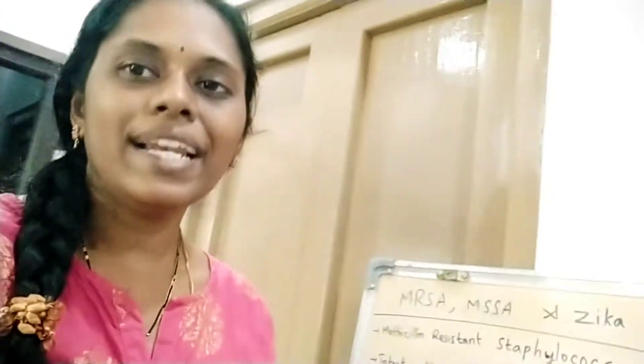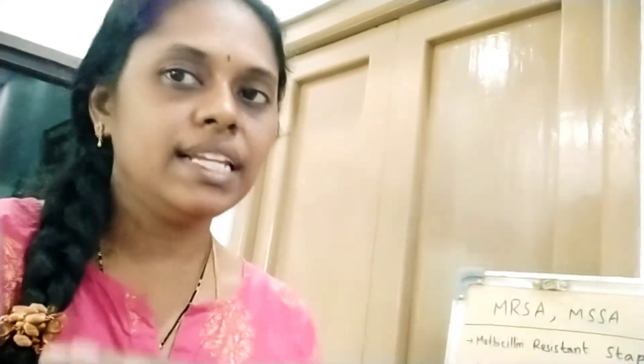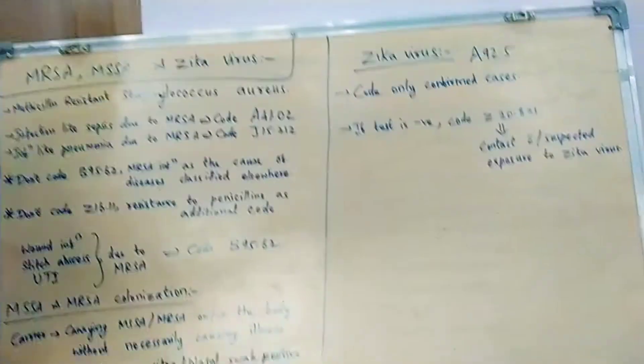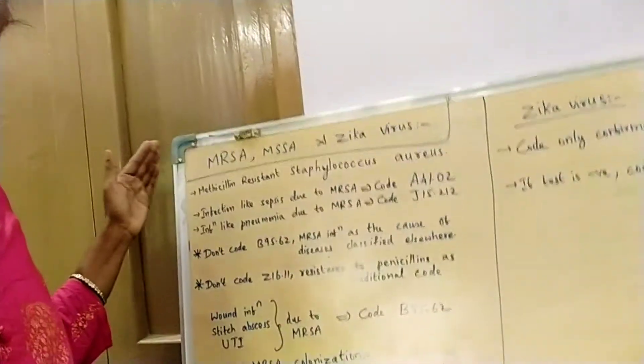Never code rule-out, suspected, or probable conditions except in inpatient settings — as per inpatient guidelines, we code probable or suspected conditions. This is all about MRSA and Zika virus. Stay tuned for the next topic: coronavirus infection coding in medical coding. I hope this is clear on MRSA, MSSA, and Zika virus. Thanks for liking, sharing, and commenting on my videos.